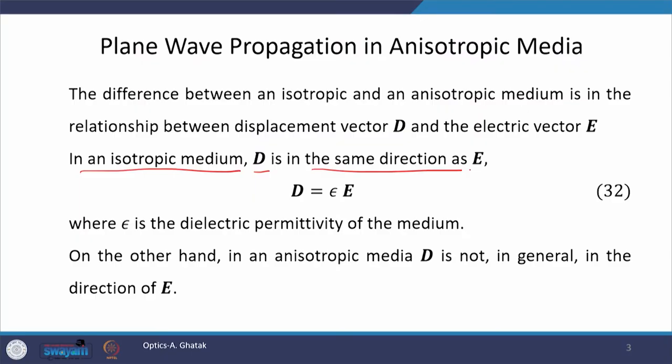These things are mathematically understood through a relation between displacement vector D and electric field E. In an isotropic medium, D is in the same direction as E, and therefore equation number 32 holds, which says that D is equal to epsilon E, where epsilon is nothing but the usual dielectric permittivity of the medium.